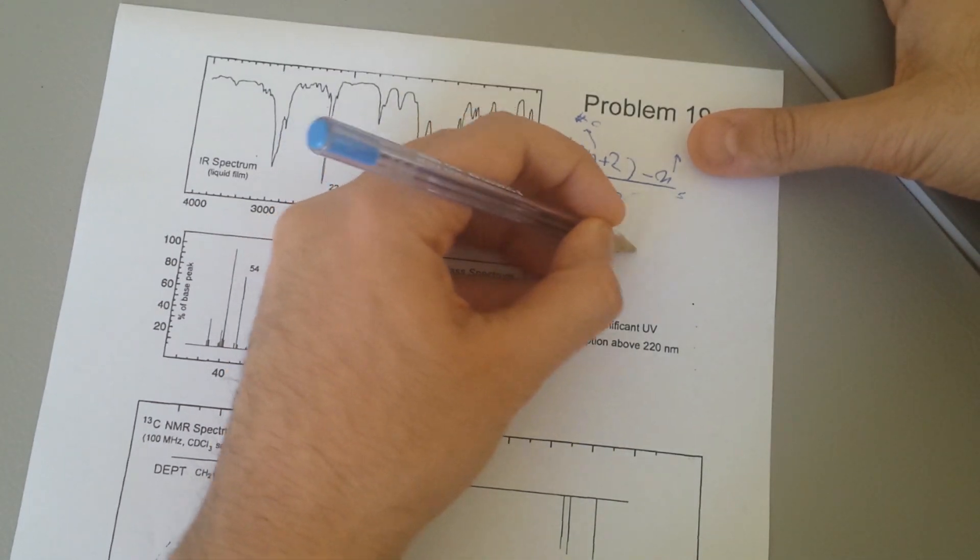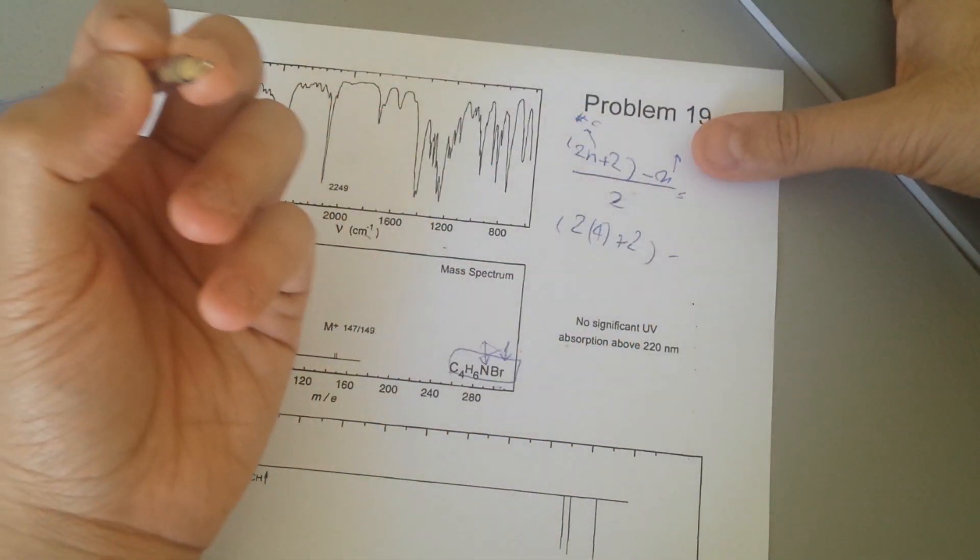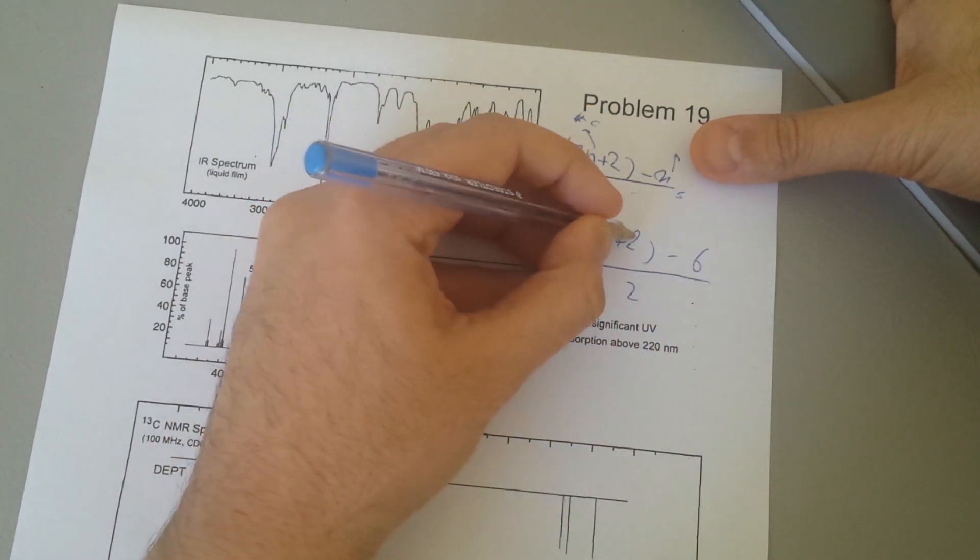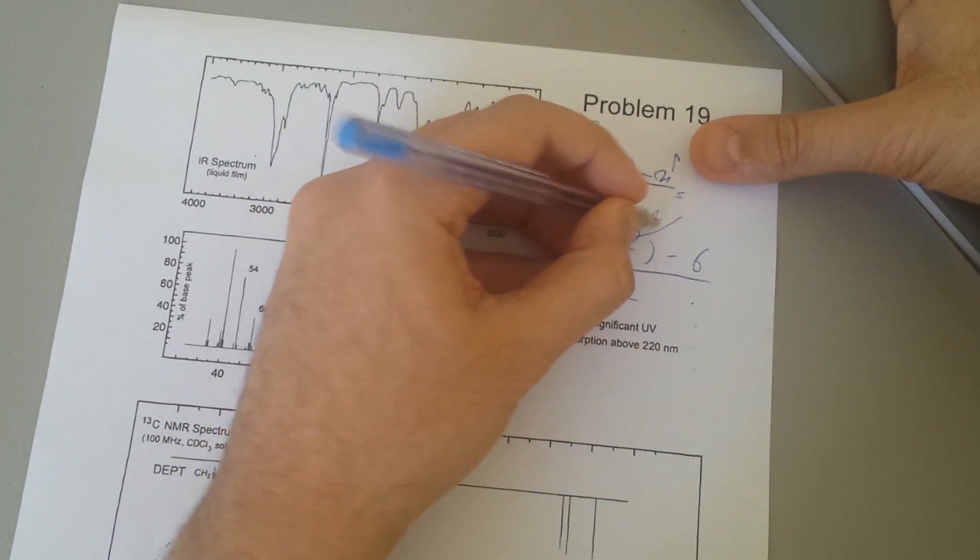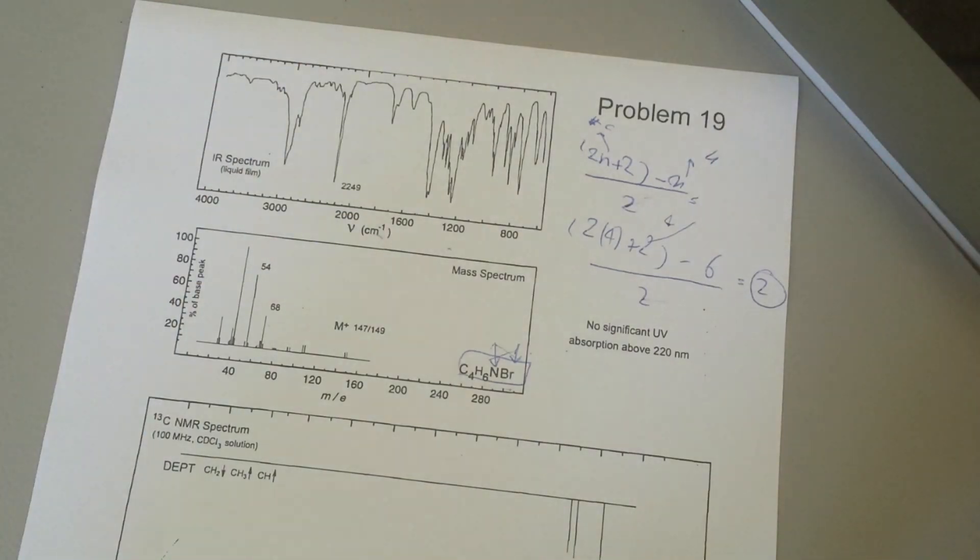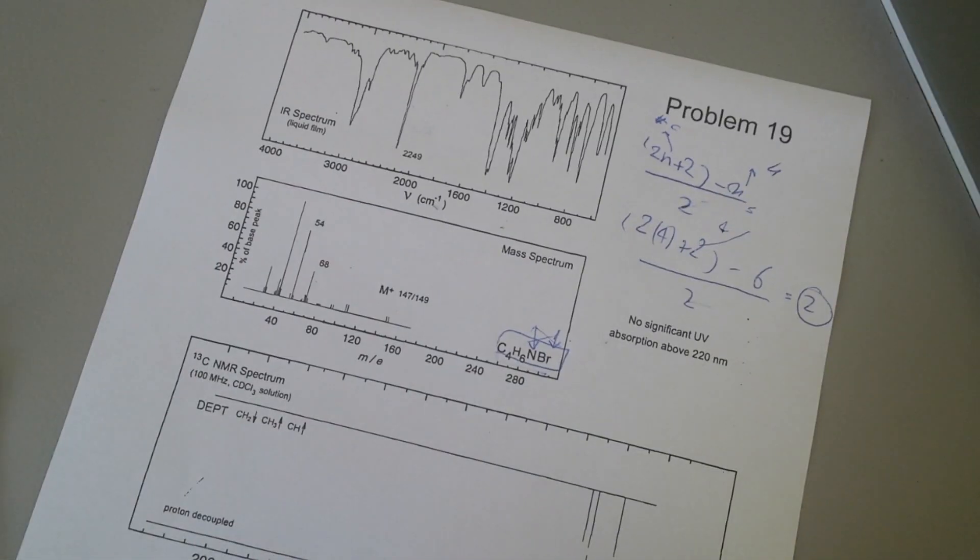2 times 4 plus 2 minus 6 over 2, which is 8, 10, 4. This will give you 4 divided by 2, which is 2 degrees of unsaturation. So this means it's not aromatic.